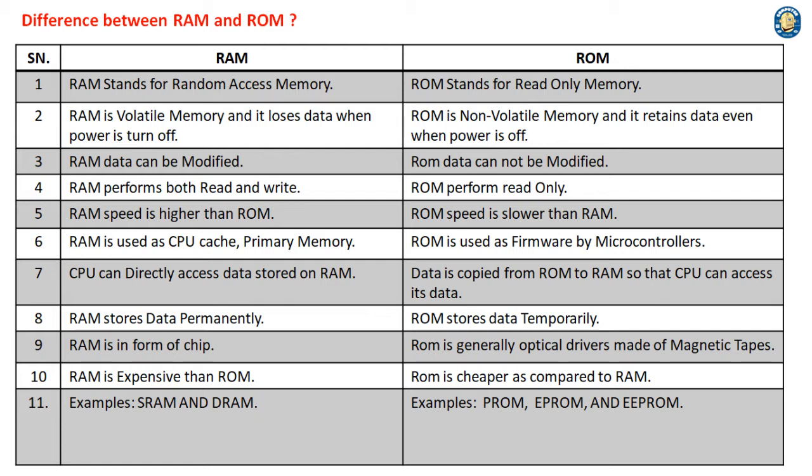2. RAM is Volatile Memory and it loses data when power is turned off. ROM is Non-Volatile Memory and it retains data even when power is off.